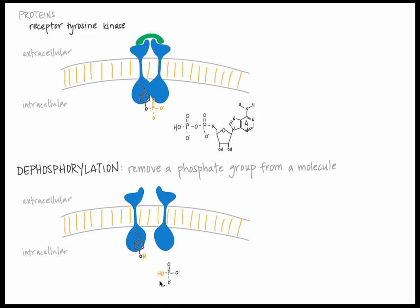Dephosphorylation does not necessarily mean synthesis of ATP. Only in certain circumstances, such as substrate-level phosphorylation in glycolysis, can a phosphate group be removed from one molecule and immediately added to ADP to form ATP.